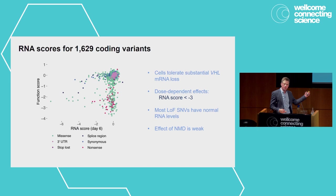This is a nice way to calibrate this, but there's still some substantial noise and it's hard to set that dosage threshold precisely. What we can say is that most variants that score lowly on function but have relatively normal RNA scores are acting at the protein level.